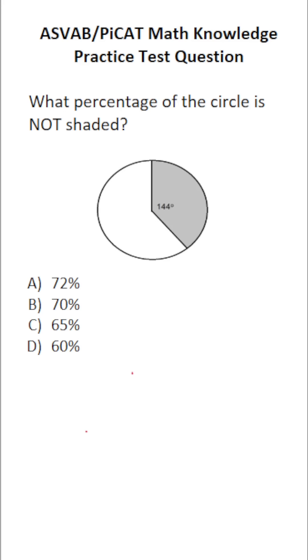This math knowledge practice test question for the ASVAB and PICAT says, what percentage of the circle is not shaded? We can see that 144 degrees of the 360 degrees in a circle are shaded.